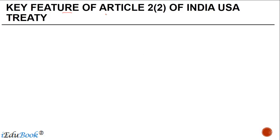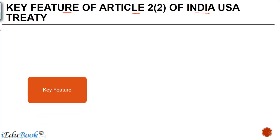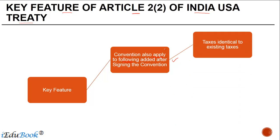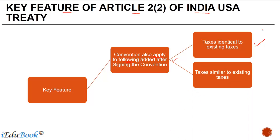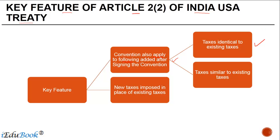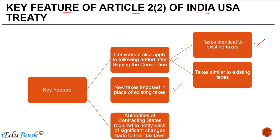What are some of the key features of Article 2 of the India-USA Treaty? The first key feature is that it also applies to the following taxes which are added after the date of signing of the India-USA Treaty: taxes which are identical to the existing taxes, taxes which are similar to the existing taxes, and new taxes which are imposed in place of the existing taxes.